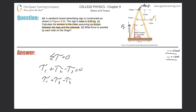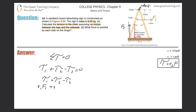Now let's substitute in the torque formula: torque equals the perpendicular lever arm multiplied by the applied force. I'm going to approach this from a geometric perspective. All R values represent perpendicular lever arms. So the equation becomes: R1 times F1 equals R3 times F3 minus R2 times F2. Solving for F1: F1 equals (R3·F3 minus R2·F2) divided by R1.